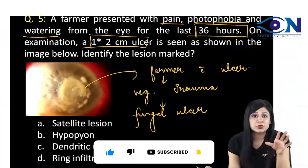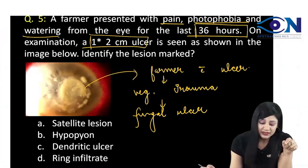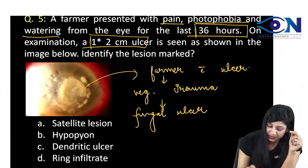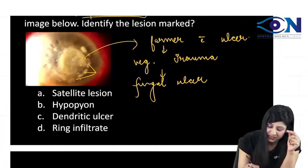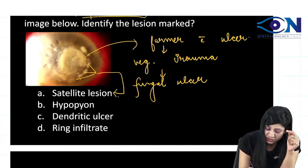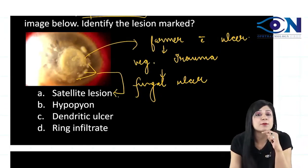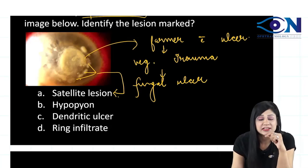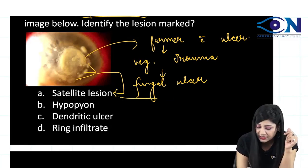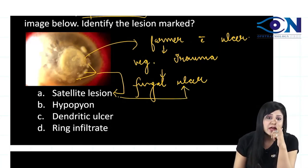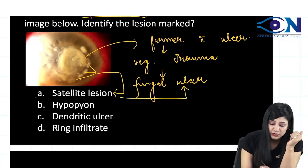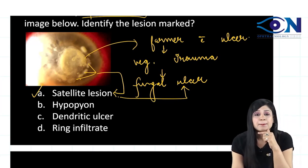From theory, now if you look at the image, you can see these — what are these? These are your multiple satellite lesions. Multiple satellite lesions are also seen in the fungal ulcer, so you are very sure that this is a satellite lesion.